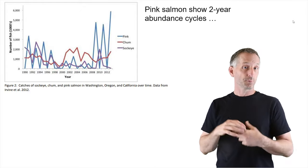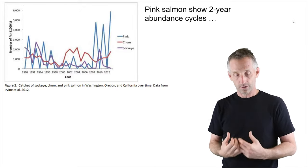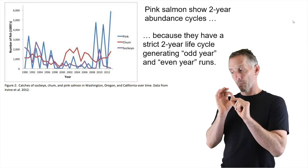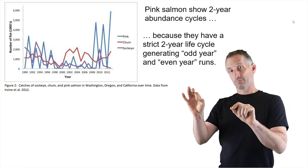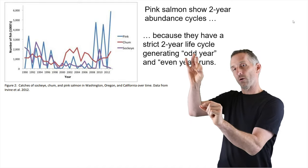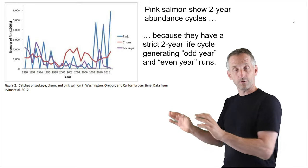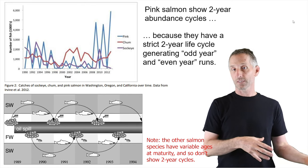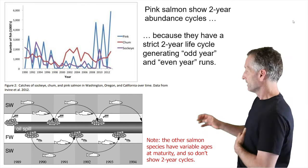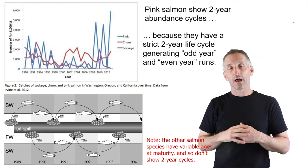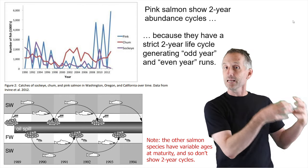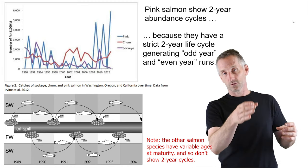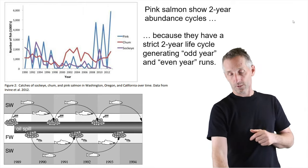The reason for the pink salmon cycle is their life history — their particular life cycle. It's a strict two-year life cycle: they hatch, live two years, lay their eggs, and then die. Those offspring grow up and spawn two years later, and so on. You have these alternating generations called lineages — odd-year runs and even-year runs of pink salmon. So you have essentially completely different lineages present in the stream in even years (2018, 2020, 2022) and odd years (2019, 2021, 2023).